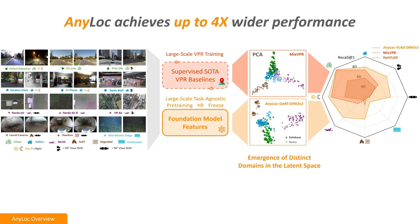We can clearly observe how features computed by AnyLoc are more discriminative for VPR compared to existing methods, by visualizing low-dimensional projections of the feature space. For MixVPR, the top-performing prior method, features computed across multiple datasets tend to concentrate very closely. However, for AnyLoc, the features are much more spread out and exhibit better separability.